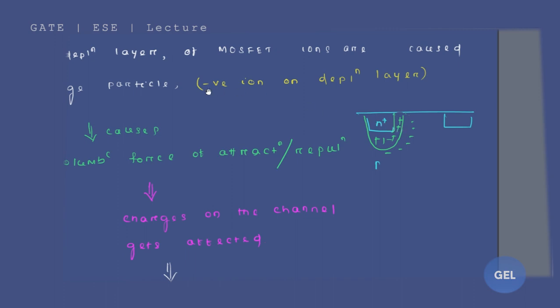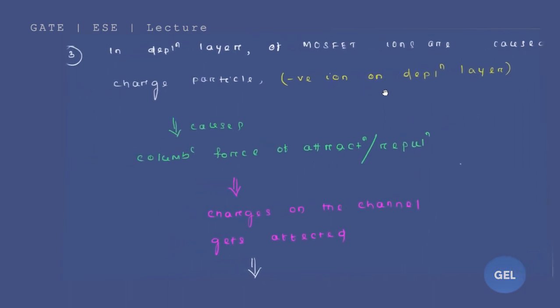The negative ions on depletion layer, mostly those negative ions in the depletion layer - so basically in the depletion layer of MOSFET, ions also caused charged particles. The ions which are there in the depletion layer, mostly the negative ions, they cause some charged particles.